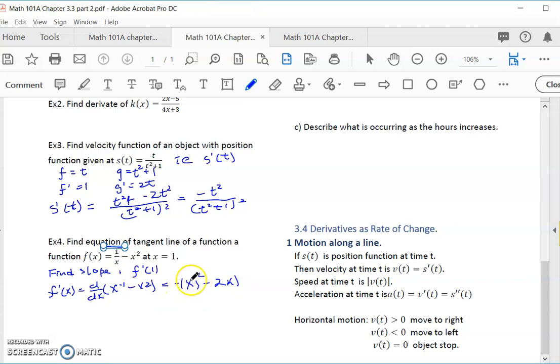This is negative x to the negative 2. So you can think of it as negative 1 on the top and then x squared minus 2x. So this is the derivative function. If you plug in 1, it would give you the slope. So I plug in 1 now. Negative 1 over 1 squared is 1 and then minus 2. So the slope is negative 3.